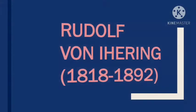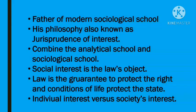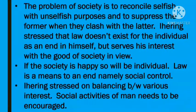Our next jurist is Rudolf von Ihering. Ihering is the father of the modern sociological school. He combined the analytical school and sociological school and gave us the philosophy called 'jurisprudence of interest.' Ihering said that law's primary objective is to protect social interests. According to Ihering, law is a guarantee to protect the rights and conditions of life, and these rights are protected through the state. According to Ihering's social interest theory, if there is a conflict between individual interests and social interests, the state should protect social interests by making laws that protect the entire society's interests. Thus, law is the means to achieve social interests.